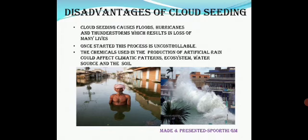Disadvantages of cloud seeding: cloud seeding may cause floods, hurricanes, and thunderstorms, resulting in loss of lives and properties. Once this process is started, it is uncontrollable. The chemicals used in cloud seeding to make artificial rainfall can have effects on climate patterns, ecological water sources, and soil.